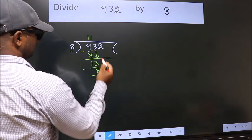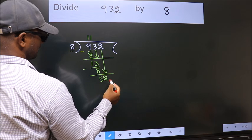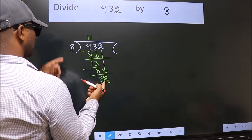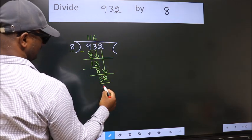After this, bring down the beside number. So 2 down. So 52. A number close to 52 in 8 table is 8, 6, 48.